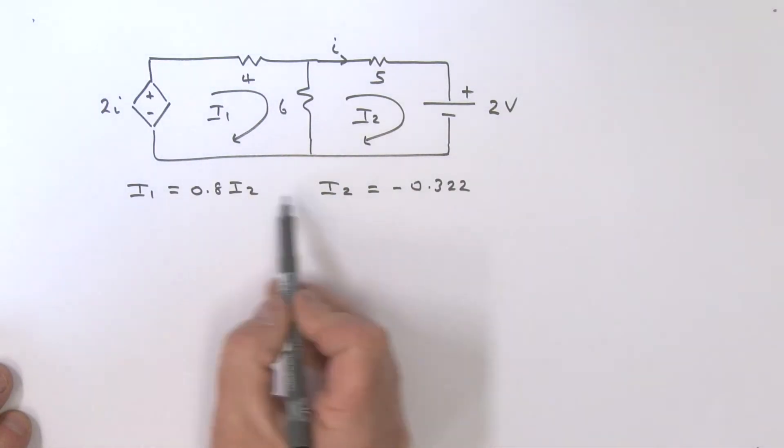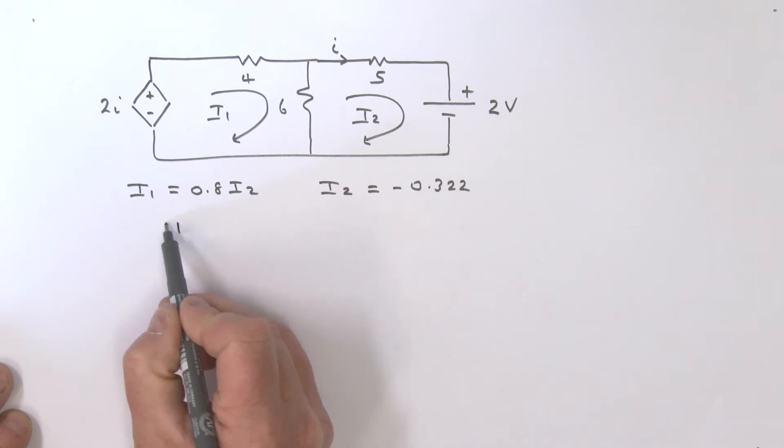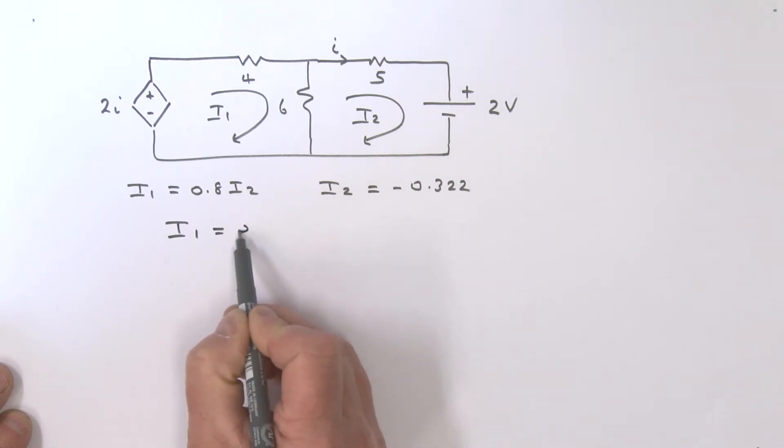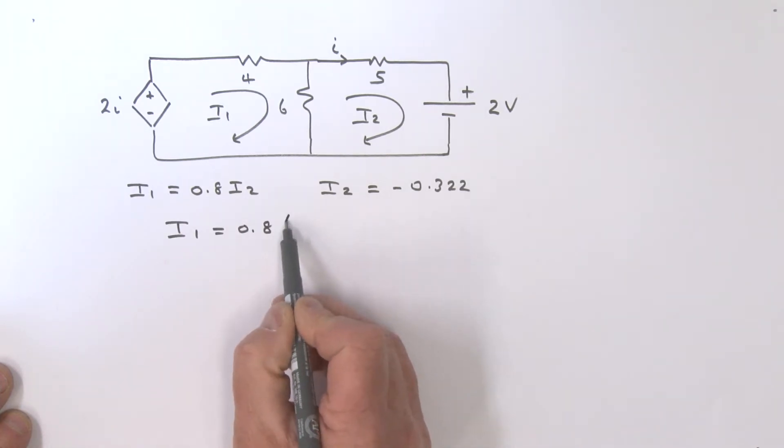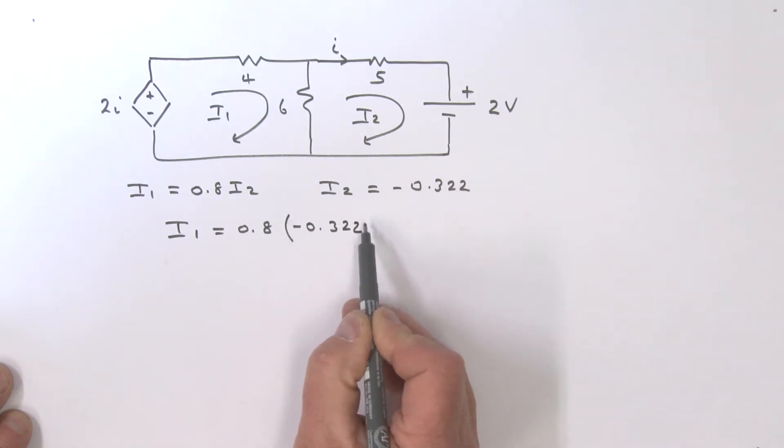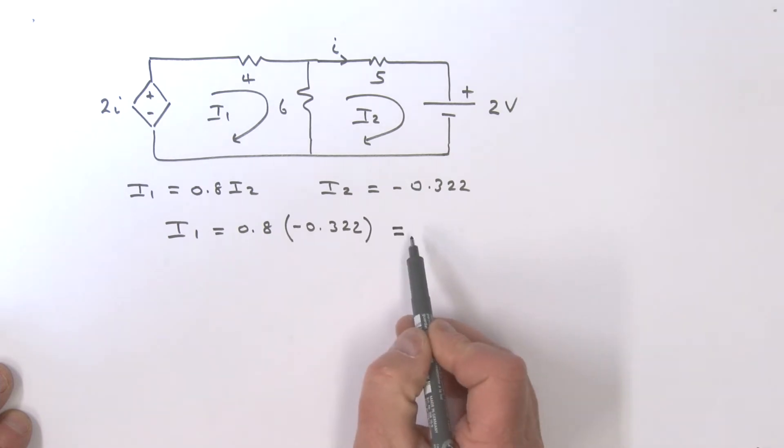We can now find I1 by putting this into our expression here. So I1 is equal to 0.8 multiplied by minus 0.322, and that gives me an I1 of about minus 0.258 amps.